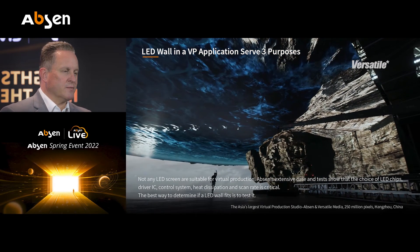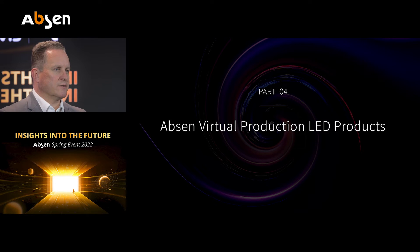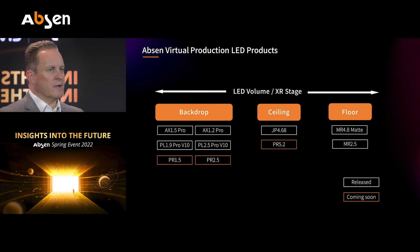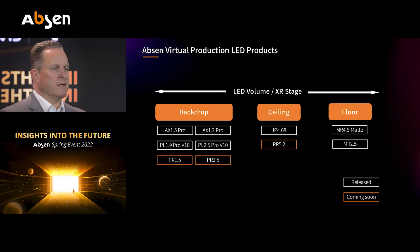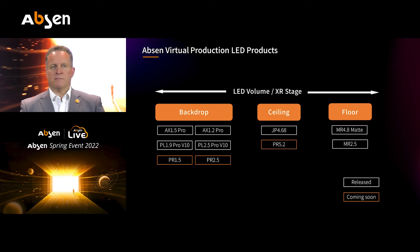Not any LED screen is really suitable for this. We have special demands here. I would like to explain the products in our range suitable for that. For the backdrop, we suggest our ARIUS series, our AX with 1.5 or 1.2 millimeter pixel pitch, or our Polaris series with 500×500 millimeter dimensions in 1.9 and 2.5 millimeter pixel pitch. Coming soon is our new Pixel Reality series — the PR — which will come in 1.5 and 2.5 millimeter, and it guided me automatically to the LED ceiling.